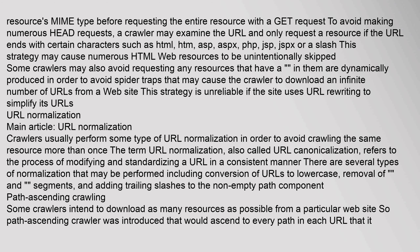Crawlers usually perform some type of URL normalization in order to avoid crawling the same resource more than once. URL normalization, also called URL canonicalization, refers to the process of modifying and standardizing a URL in a consistent manner. There are several types of normalization that may be performed, including conversion of URLs to lowercase, removal of dot and double-dot segments, and adding trailing slashes to the non-empty path component.